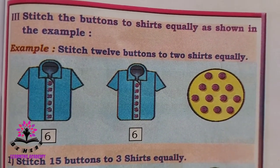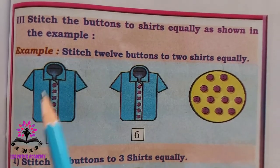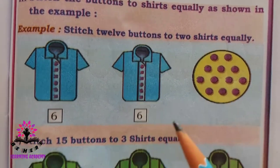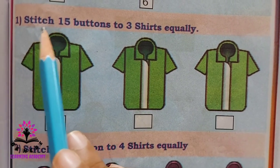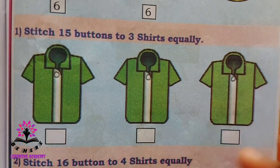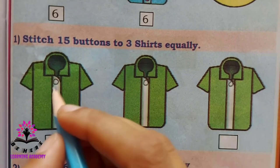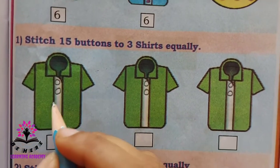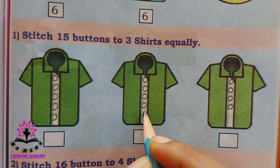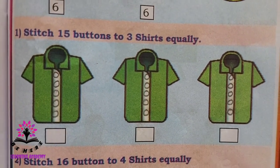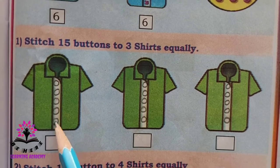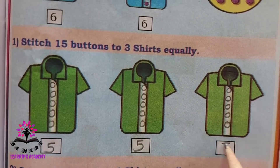Stitch the buttons to show equal distribution as shown in the example. There were twelve buttons and two shirts — so each shirt will get six buttons each. Here there are fifteen buttons — stitch fifteen buttons into three shirts. First put one button each: one, two, three; then continue distributing up to fifteen. Now tell me how many are there in each shirt — five, five, and five.